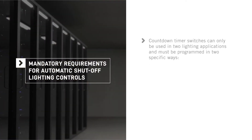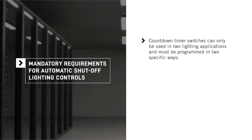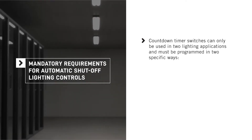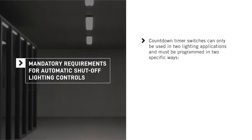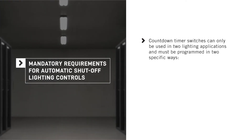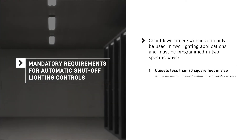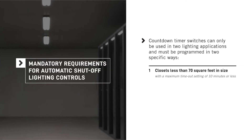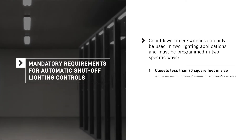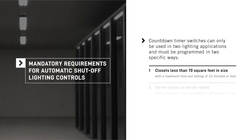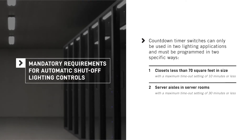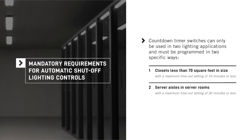A simple type of shutoff control is a countdown timer switch. Under the Energy Code, these devices can only be used in two lighting applications: closets less than 70 square feet in size with a maximum timeout setting of 10 minutes or less, and server aisles in server rooms with a maximum timeout setting of 30 minutes or less.